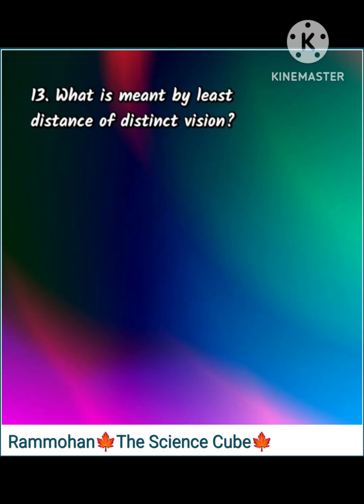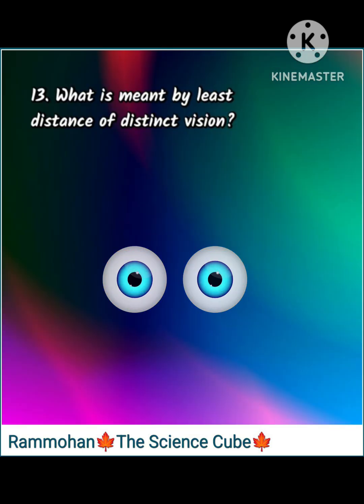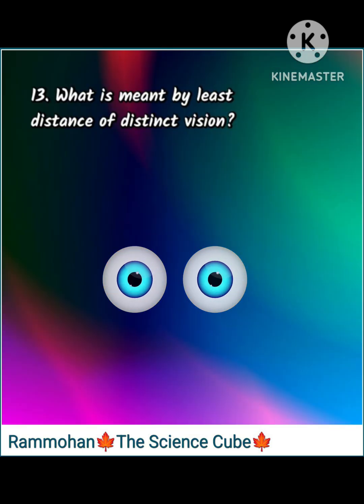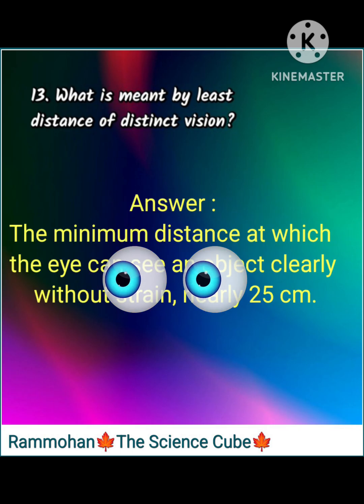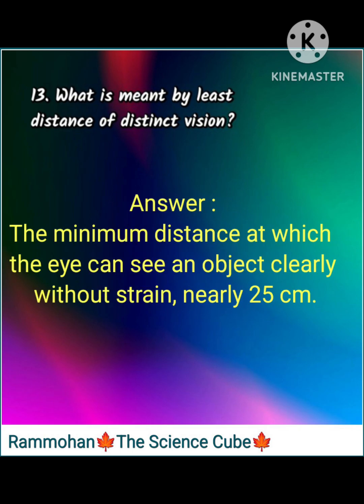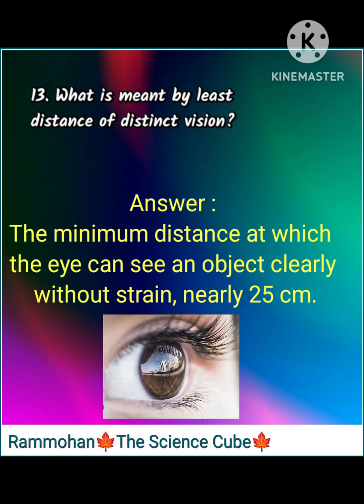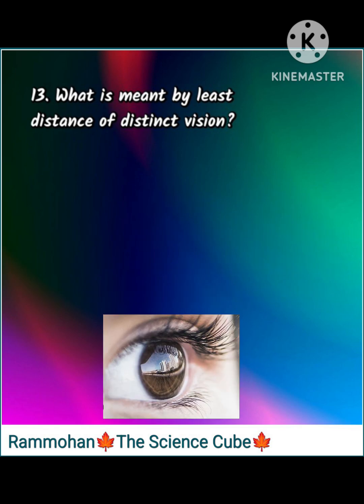Thirteenth question: what is meant by the least distance of distinct vision? Answer: the minimum distance at which the eye can see an object clearly without strain — nearly 25 centimeters.